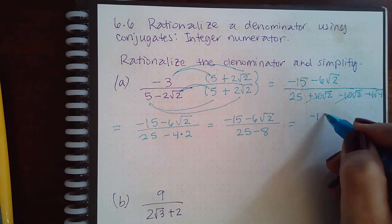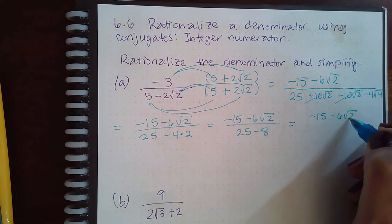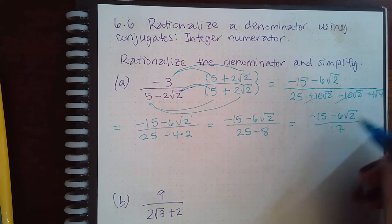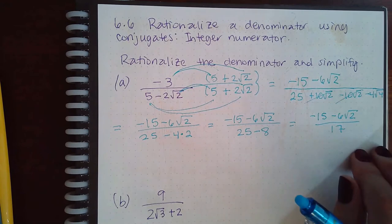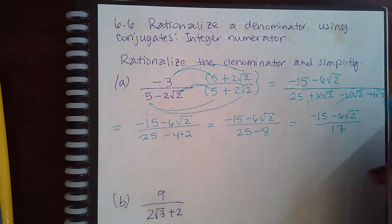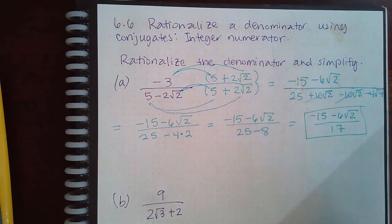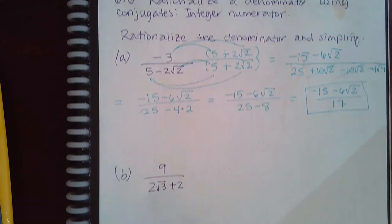And so I get negative 15 minus 6 square root of 2 over 17. Now if these could be reduced, I would have split the fraction and kept going. But 17 is prime, so it's not going to reduce with negative 15 or negative 6. So that is the final answer there.